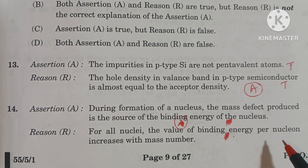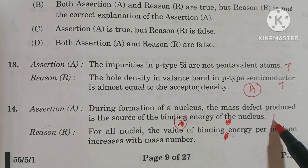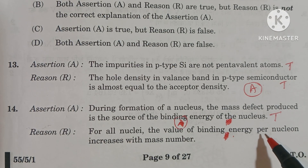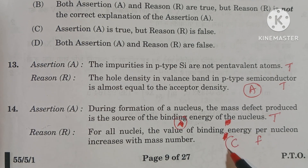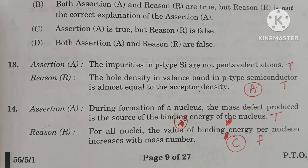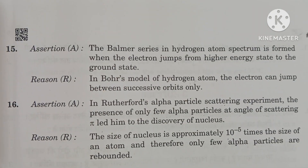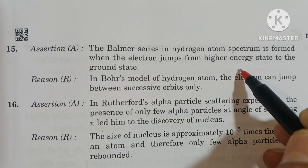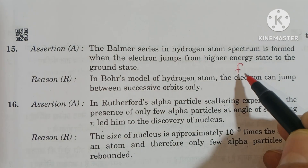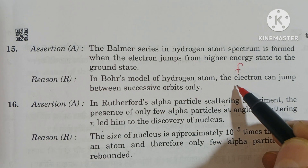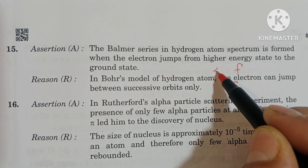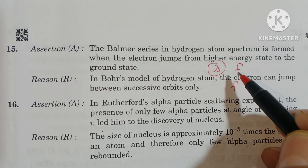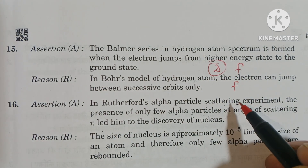Question number 14: in this question, Assertion is true but Reason is false, so here C option is the correct option. In question number 15, Assertion is false, also Reason is false, so here D is the correct option — both Assertion and Reason are false.